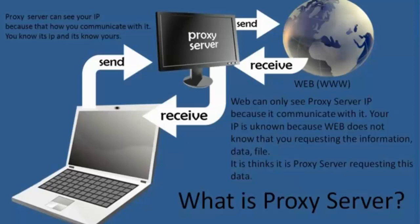So here's a quick recap of the concept: you connect to a third party — the proxy server — and send it a request, say www.google.com. The proxy server accepts that information and goes to www.google.com, gets data from that website, and sends it back to you, acting as a middleman. So www.google.com only knows the proxy server's IP address — it does not know your IP.